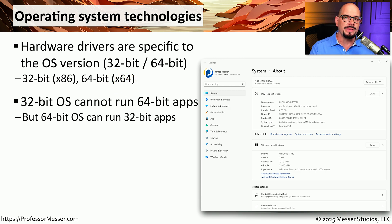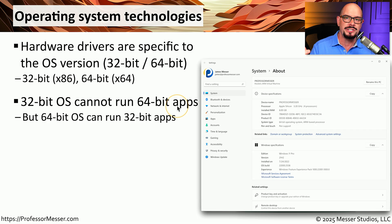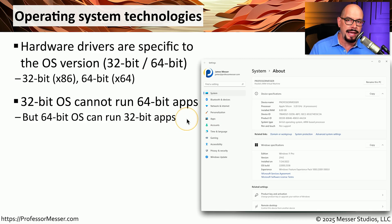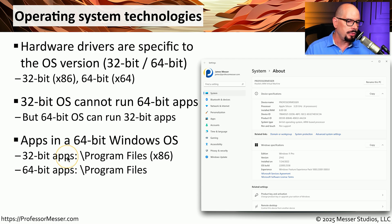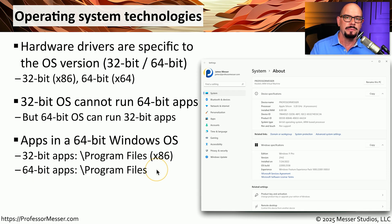The applications that run on these different operating systems are also different. A 32-bit operating system cannot run applications made for a 64-bit operating system. The reverse, however, is usually true — a 64-bit operating system can usually run 32-bit applications. If you look at your Windows operating system, you'll notice that the Program Files folder has different areas: all of your 32-bit applications are installed in Program Files x86, and your 64-bit applications are stored in Program Files.